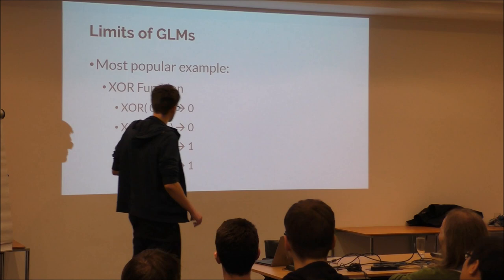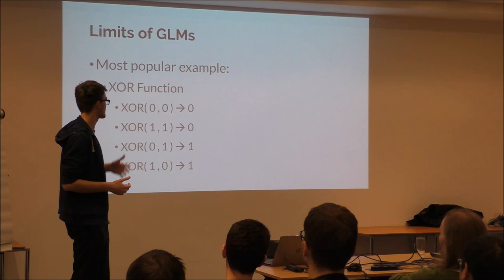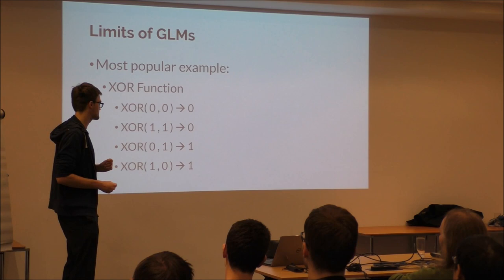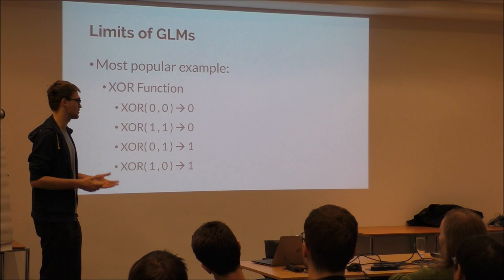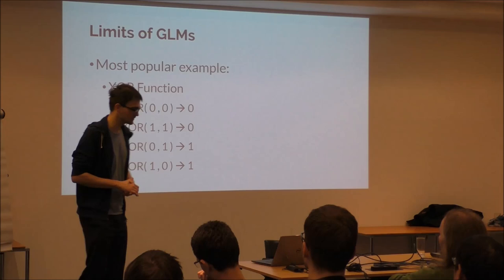One very popular example is the XOR function. XOR is a computer science function — basically if you input the same thing twice, you get zero; if you input different things, you get one. It's a very simple function, but you cannot learn it with a simple linear model without doing lots of preprocessing and applying tricks.